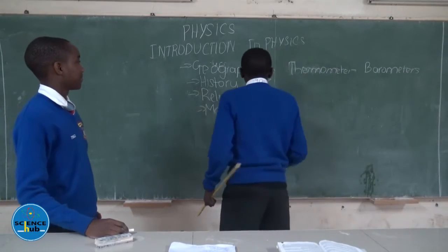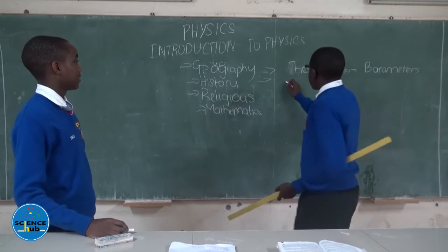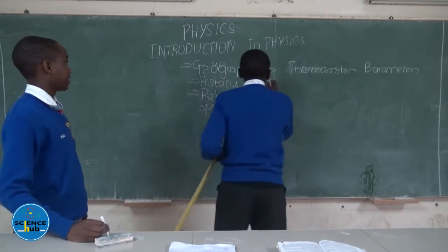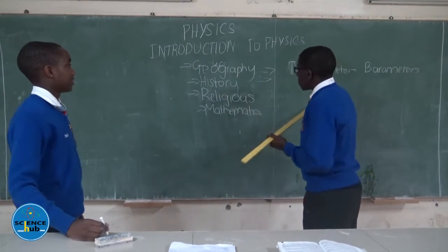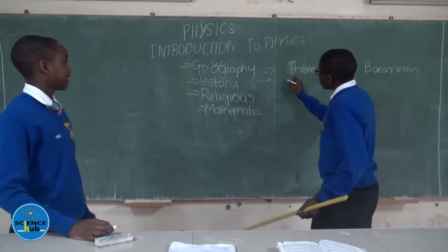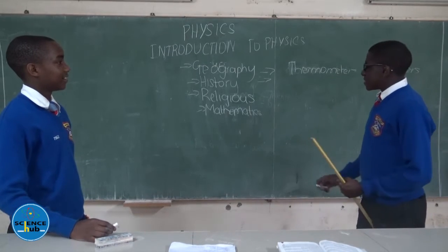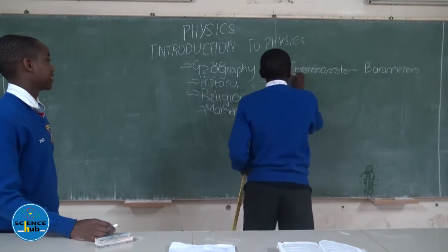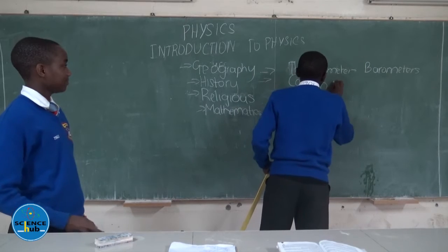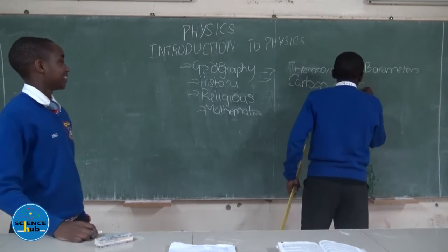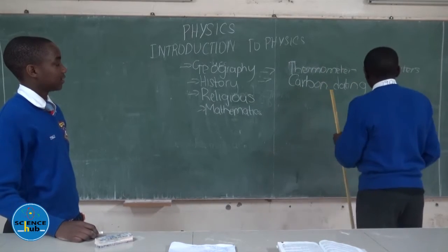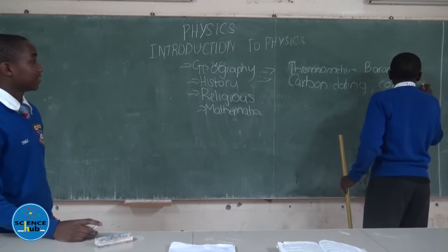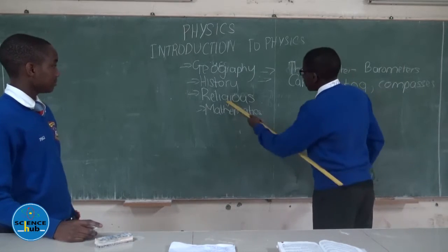In history, physics has been applied in various ways. In history, we study different ways of dating, such as fossils — fossils are ancient aspects. The application of physics has been used in carbon dating and the making of compasses, which use the rule of magnetism.